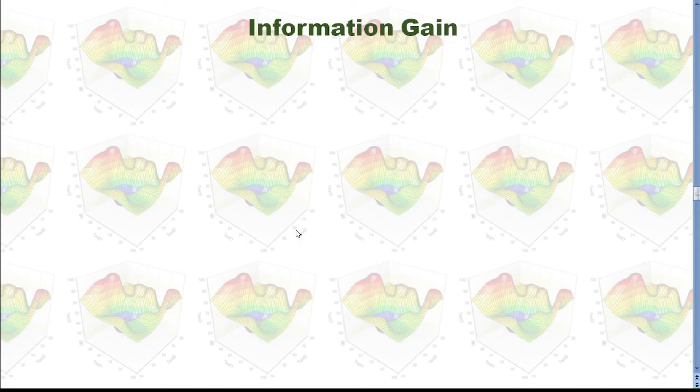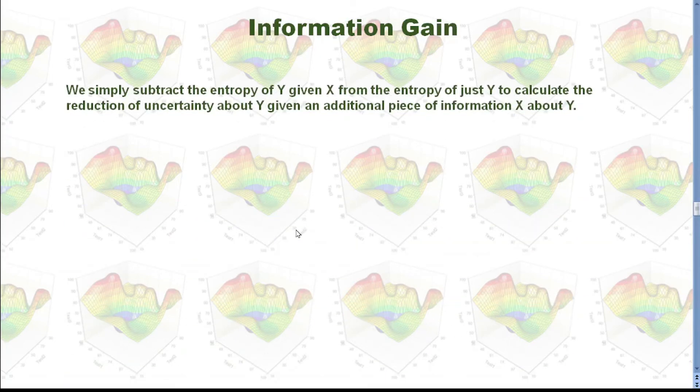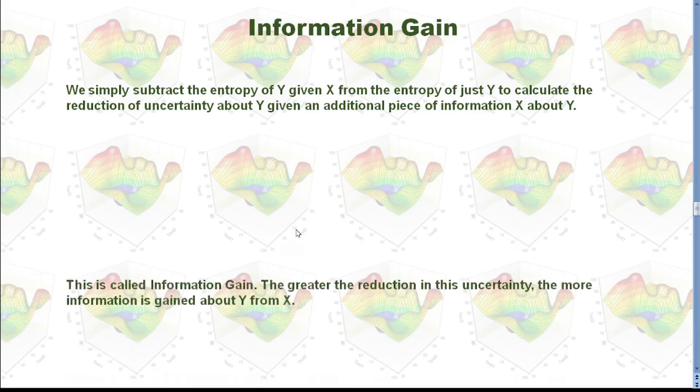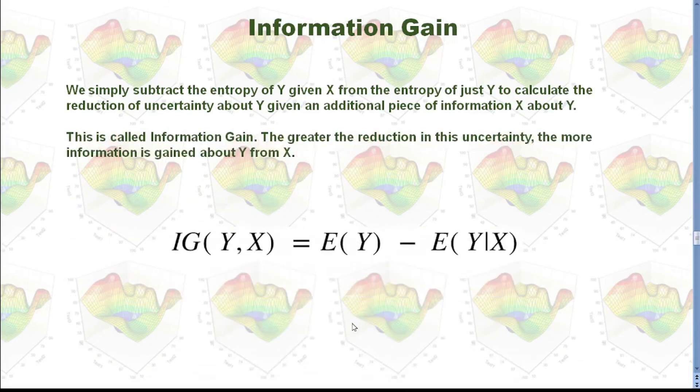Now we need to use information gain. Information gain is the difference between the entropy of this step and the previous step. This is entropy of Y. And if we give the state of X, the entropy of Y will change. And we will calculate the difference. That will be the information gain.